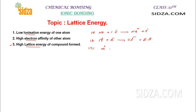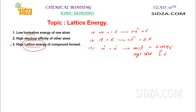Once these ions are formed — a cation and an anion — they come close and form a crystalline solid due to the attraction between the oppositely charged cations and anions. Some energy is released, and this energy is called lattice energy. Lattice energy is the amount of energy released when the gaseous cations and anions come together to form one mole of an ionic crystal.